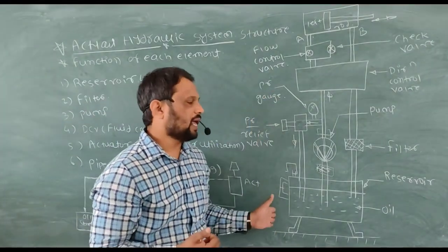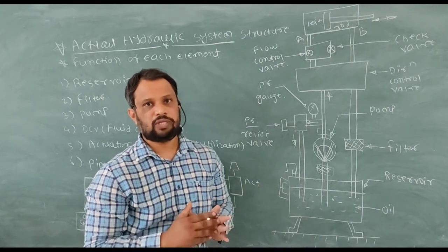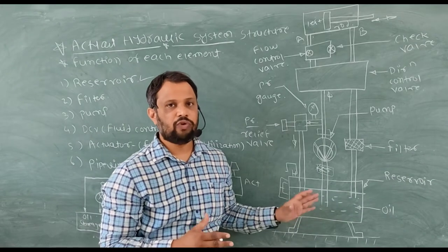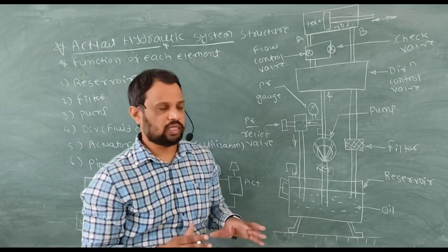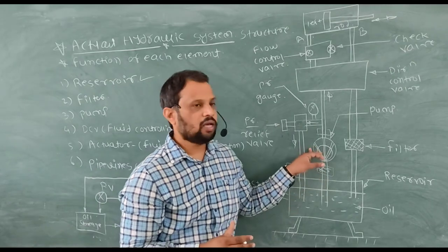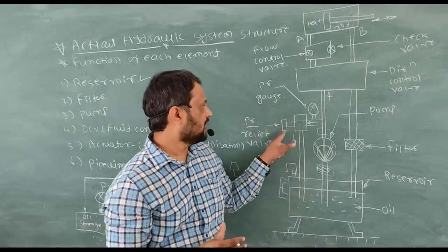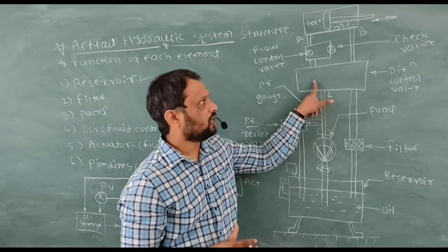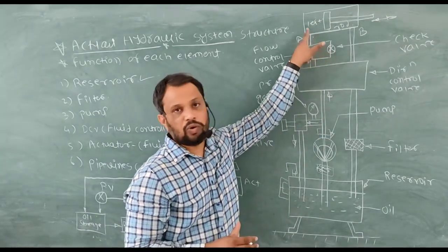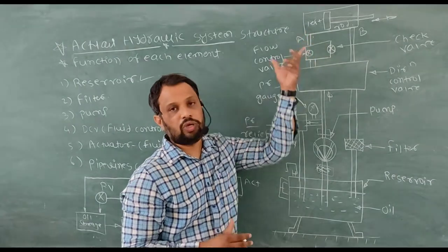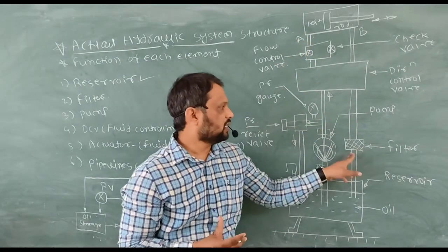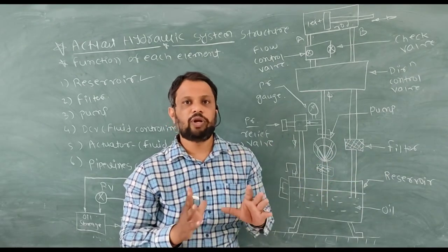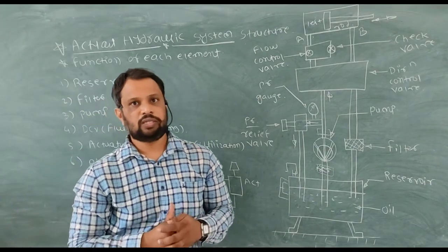This diagram shows your actual hydraulic system structure. At the base of this structure you can see there is one oil reservoir which stores oil for your system. After that there is a hydraulic pump, then a pressure relief valve, pressure gauge, direction control valve, flow control valve, check valve, your actuator — also called a cylinder — and after that there is one filter. These are the general components used in your hydraulic system.